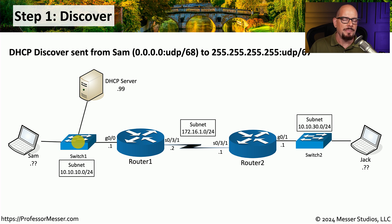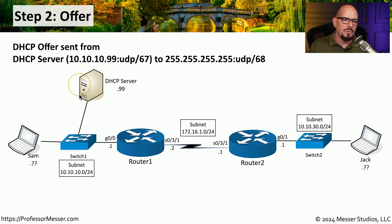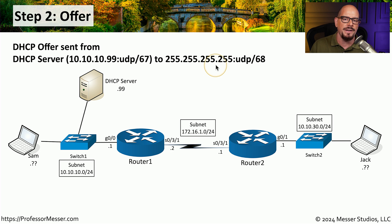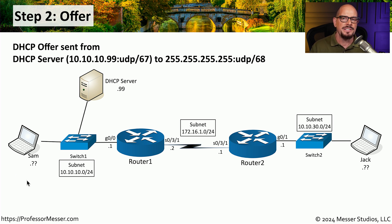This packet is sent from Sam's laptop and, because it's a broadcast, it's sent to all devices on this local subnet. The DHCP server will see that broadcast and send a DHCP offer — step two of the DHCP process. This DHCP server has an IP address of 10.10.10.99, and it will send this with a source port number of UDP port 67. The server sends this as a broadcast to 255.255.255.255 with a destination port number of UDP 68, because Sam's workstation currently does not have an IP address and the only way her device would see this packet is if it's sent to all devices on the subnet.